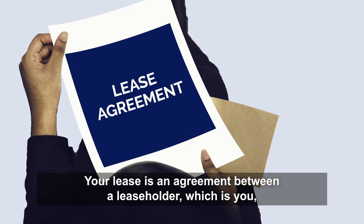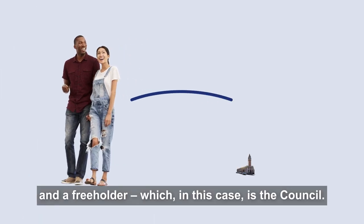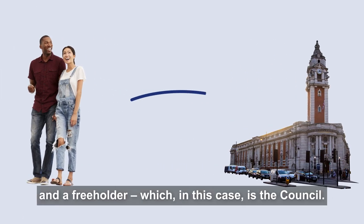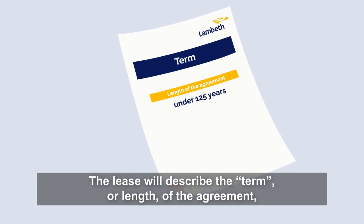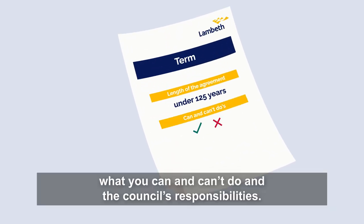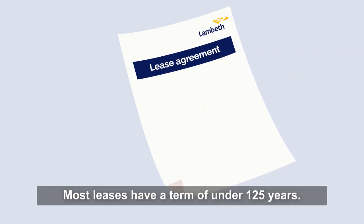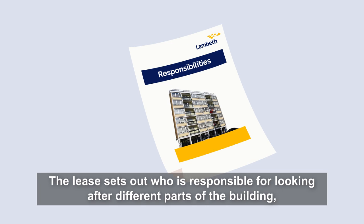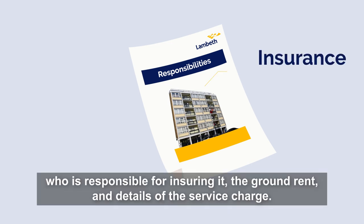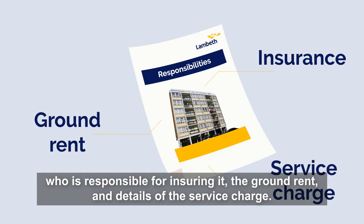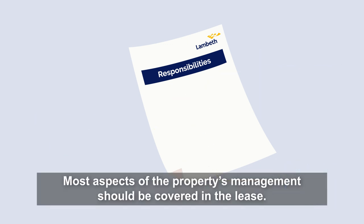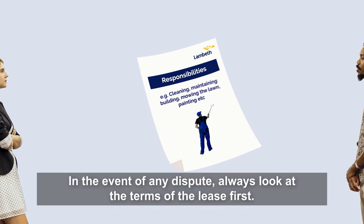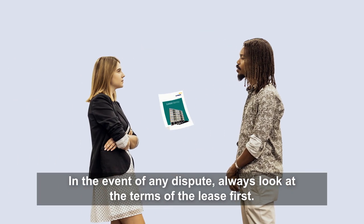Your lease is an agreement between a leaseholder, which is you, and a freeholder, which in this case is the council. The lease will describe the term or length of the agreement, what you can and can't do, and the council's responsibilities. Most leases have a term of under 125 years. Whatever the length, that is the fixed period of the lease, but it is possible to extend. The lease sets out who is responsible for looking after different parts of the building, who is responsible for insuring it, the ground rent and details of the service charge. Most aspects of the property's management should be covered in the lease. In the event of any dispute, always look at the terms of the lease first.